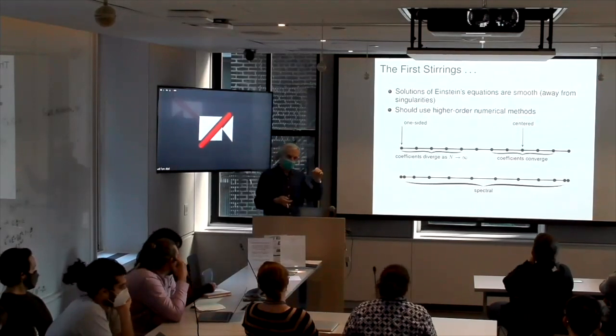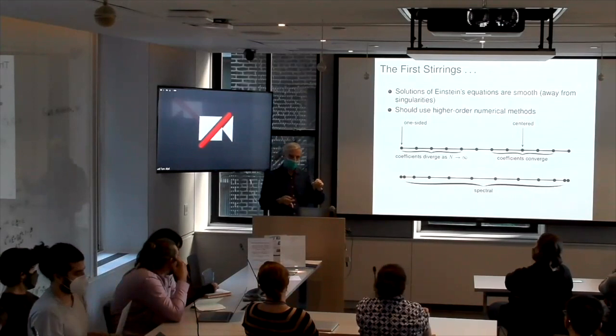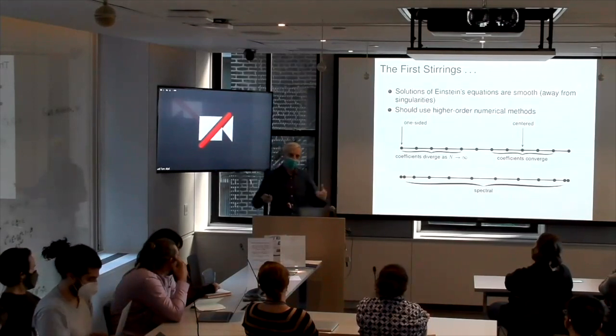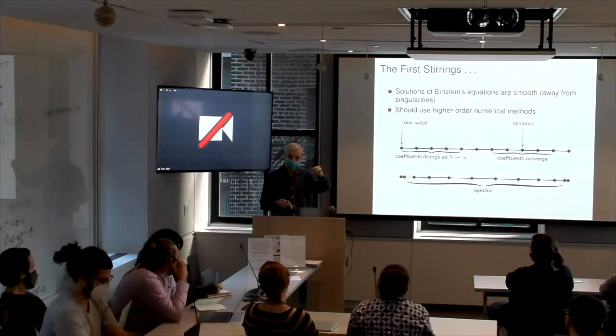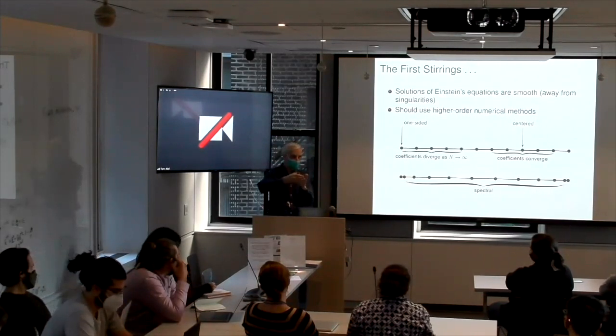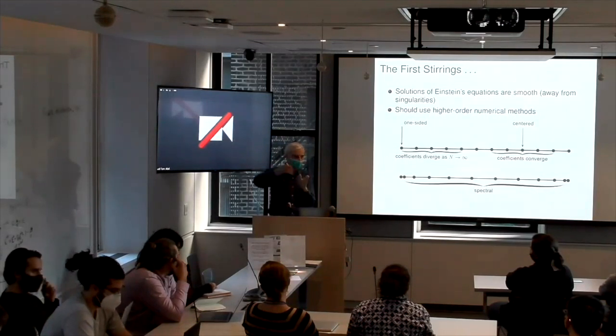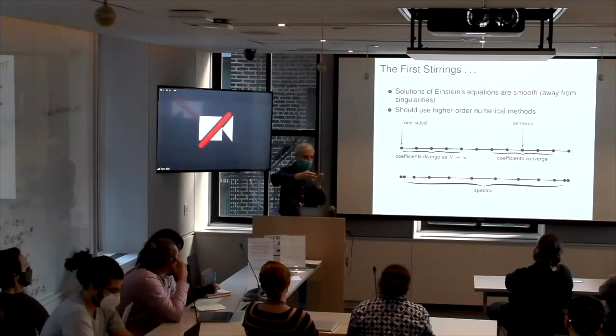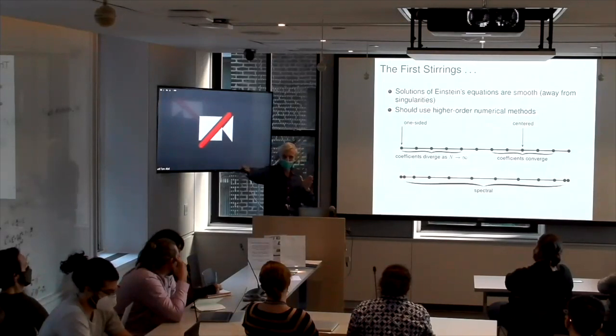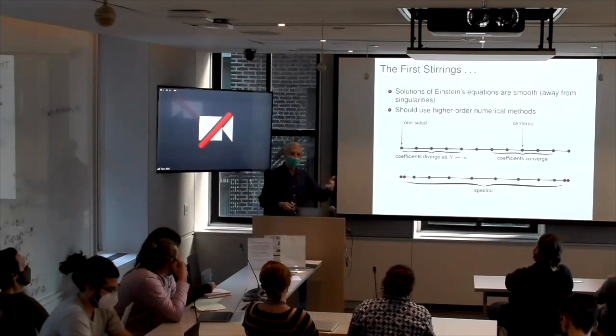So if you have smooth solutions, then any numerical analyst would tell you you should use a high order numerical method. So that's in the sense of, if you're making some Taylor series approximation, you should be not just using some linear quadratic formula. You should be using something of higher order because you get more bang for your buck then.